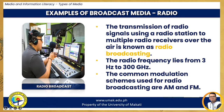Another example of broadcast media is radio. The transmission of radio signals using a radio station to multiple radio receivers over the air is known as radio broadcasting. The radio frequency lies from 3 Hz to 300 GHz, and the common modulation schemes used for radio broadcasting are AM and FM. Radio has undergone considerable changes in the past few years. It used to be the premier mass medium for audiences and advertisers, because it can deliver ad messages to a very large number of audiences across the length and breadth of a particular geographic area.